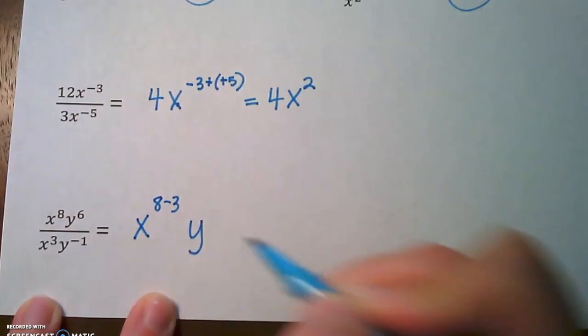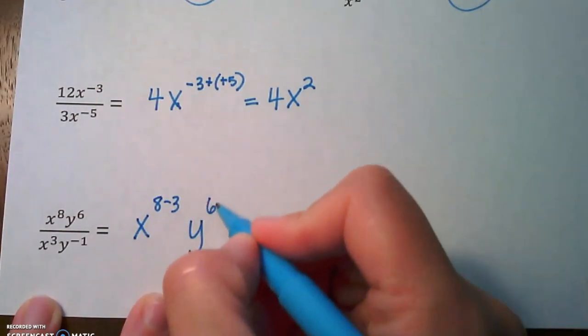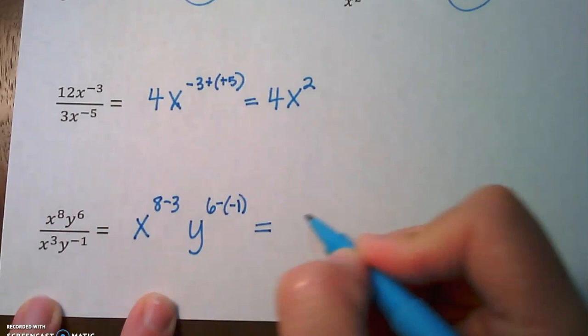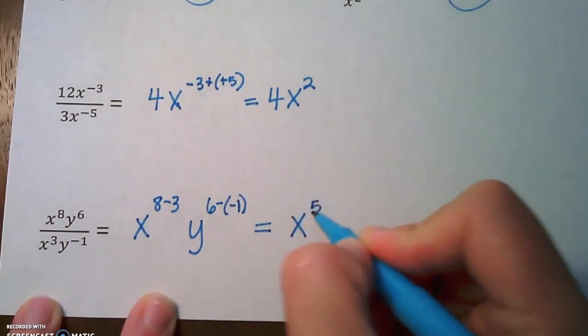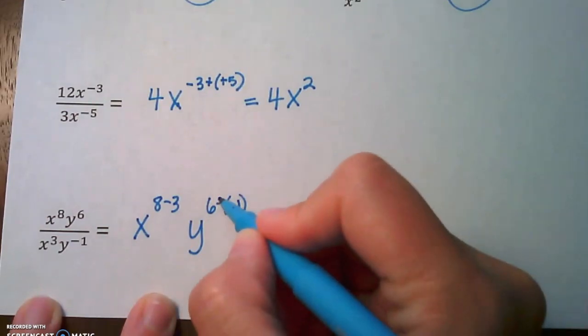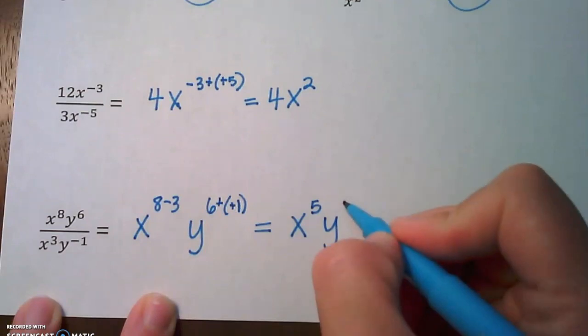Let's clean that up. That's going to be x to the fifth times y to the 6 plus 1, which is y to the seventh.